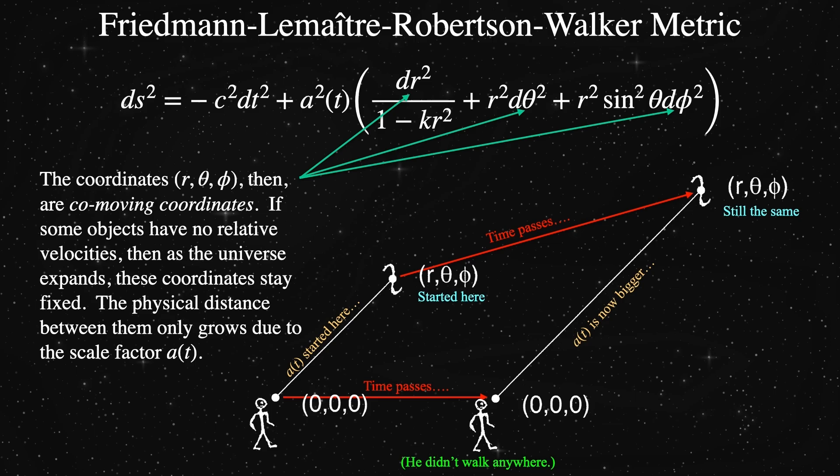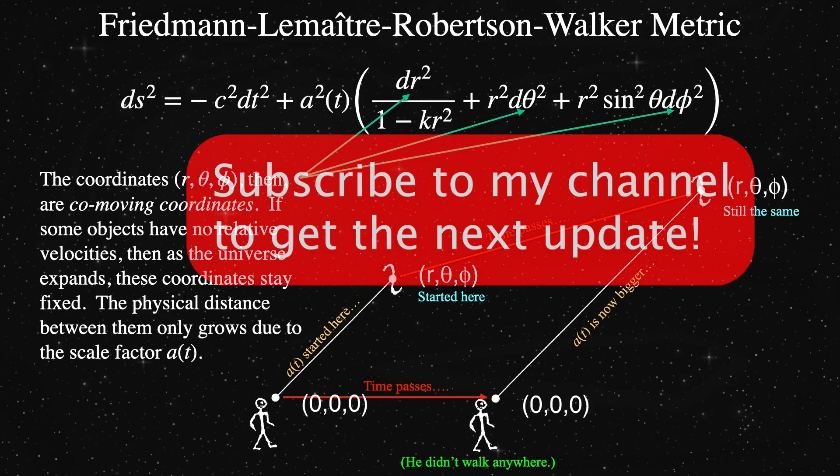The takeaway here is that co-moving coordinates do not change as the universe expands unless the distant objects have their own proper space motions.